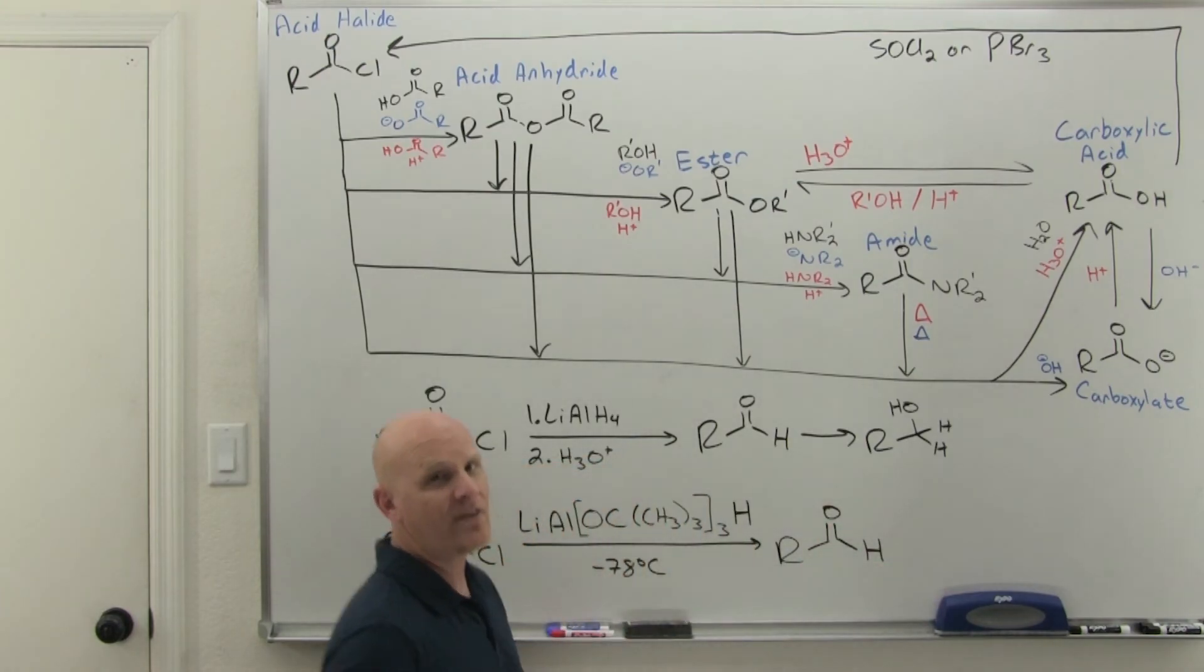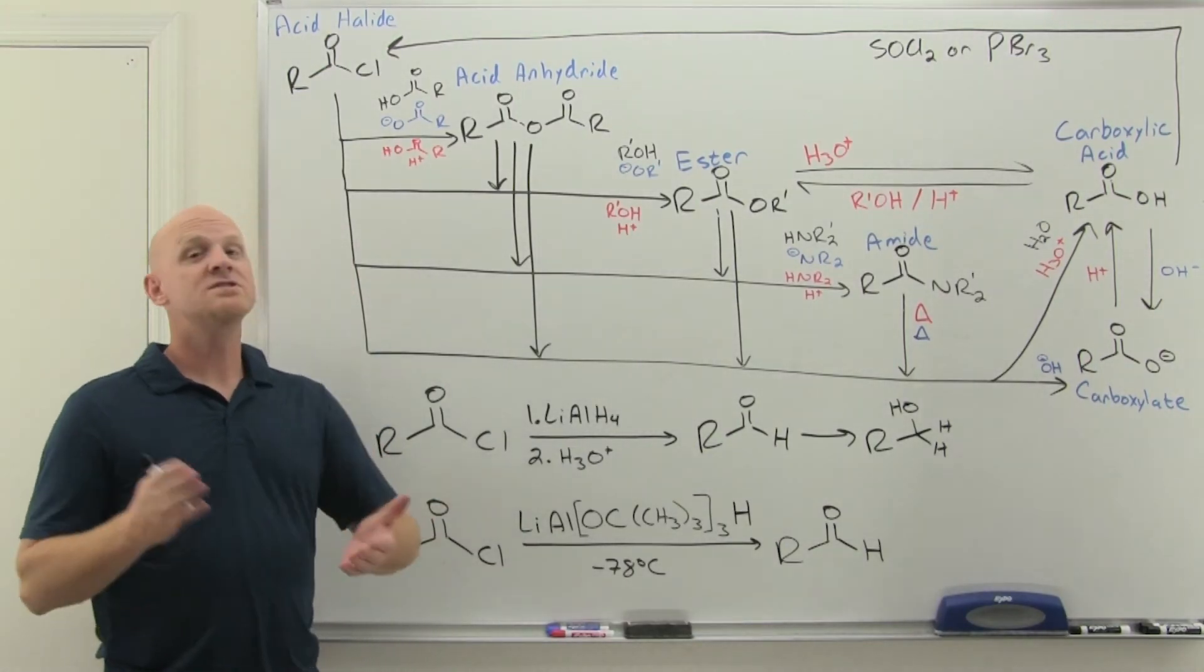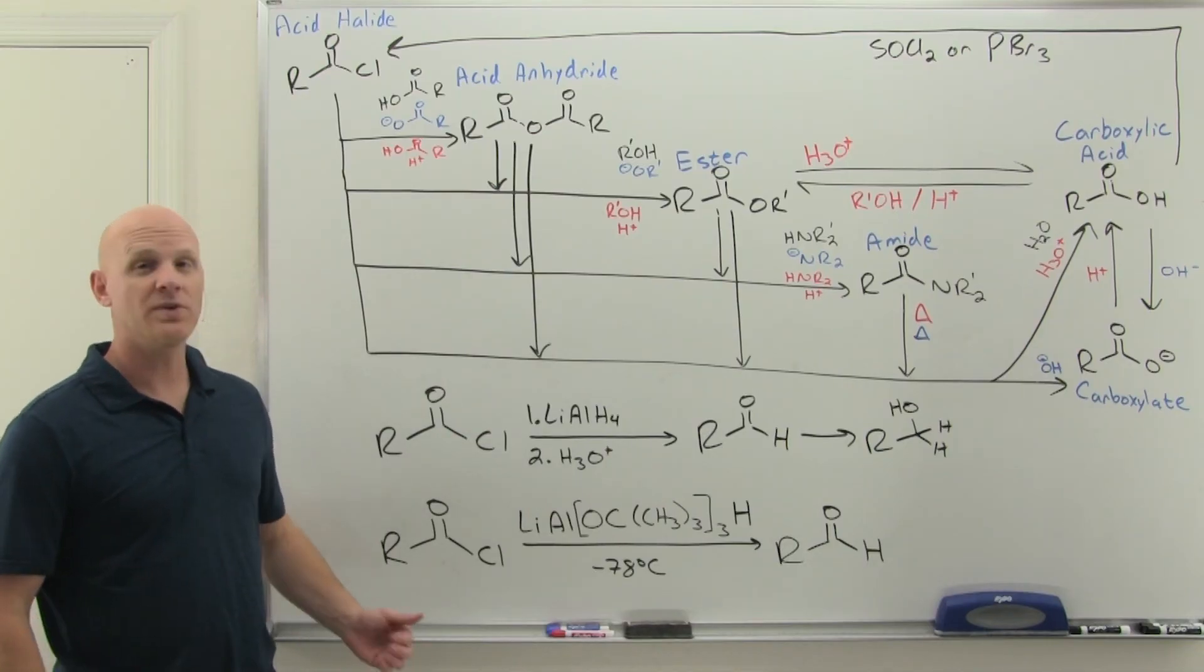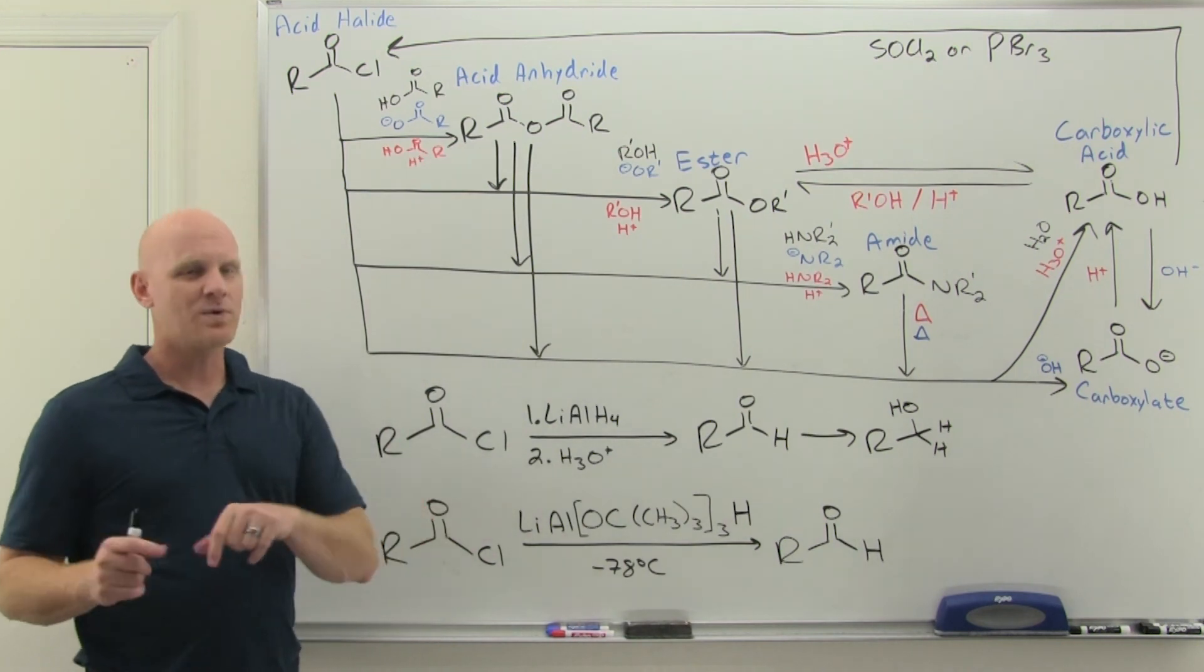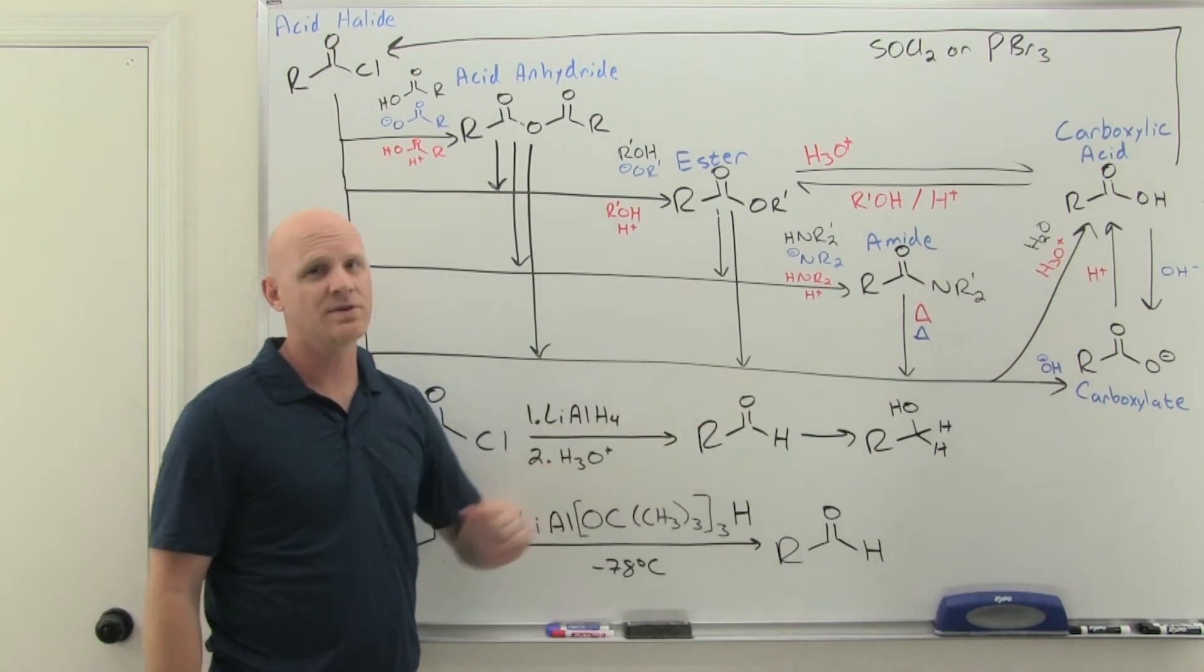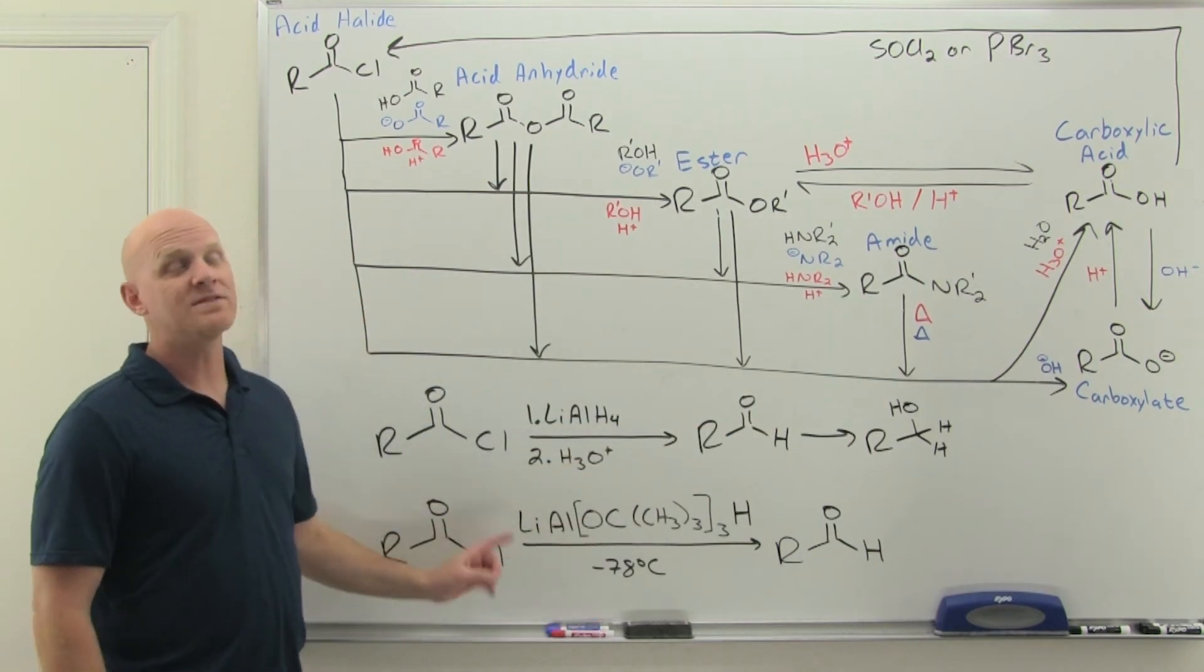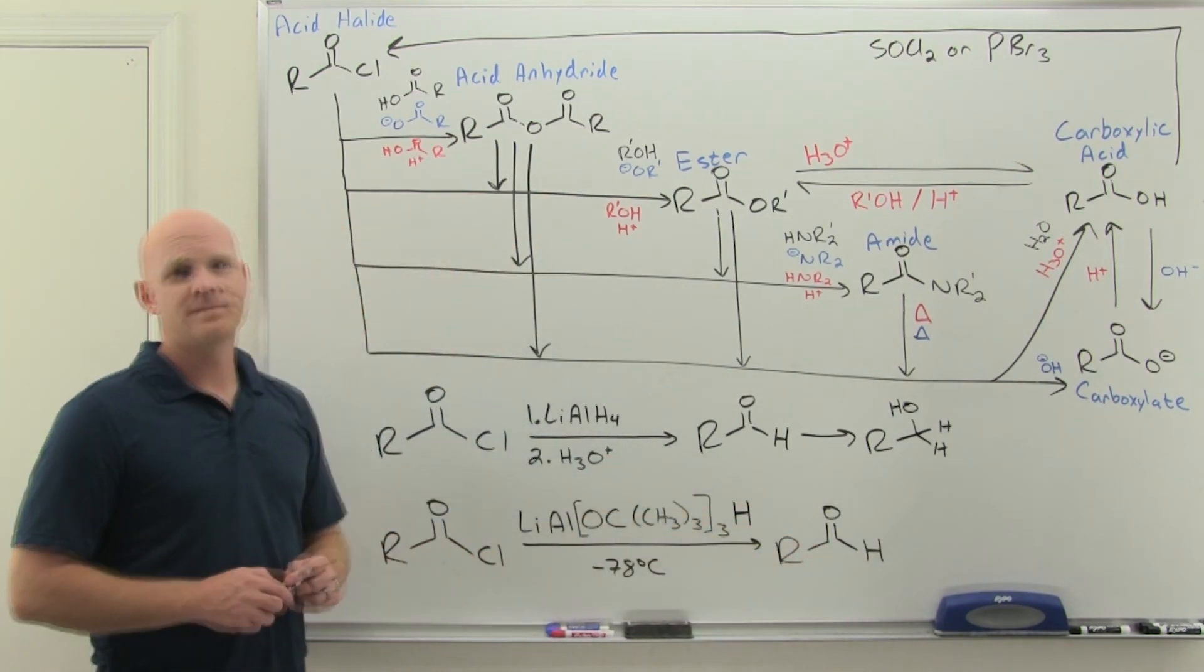Just like we saw with organometallics: with a standard organometallic like a Grignard, you add twice, but with a special organometallic that's a little less reactive, like the organocuprate, it only adds once. Same thing here: a standard hydride reagent's going to add twice to an acyl halide no matter what, whereas your bulky one at low temperatures we can stop it to get the aldehyde, adding only once.